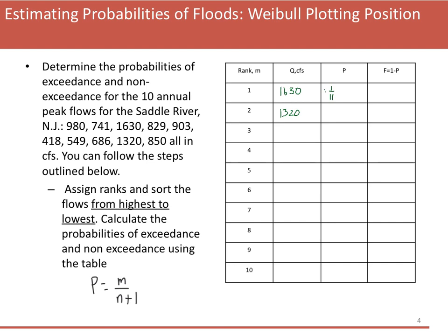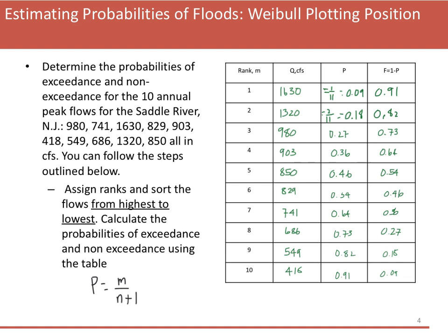Let's do the second one together. In this case, P is 2 over 11, which equals 0.18, and F is 0.82. Go ahead and pause the video and try to fill out the rest of the table yourself. Here's the table completely filled out.